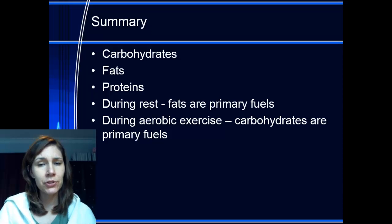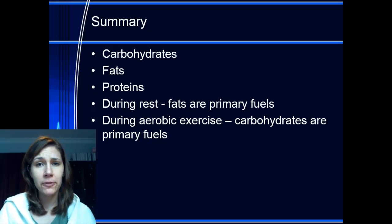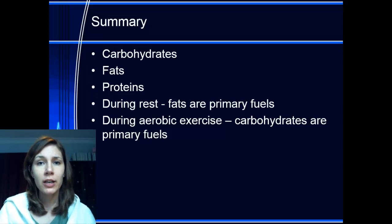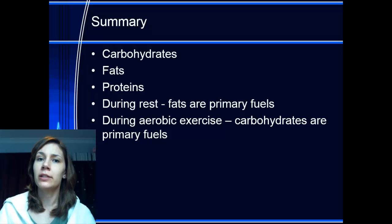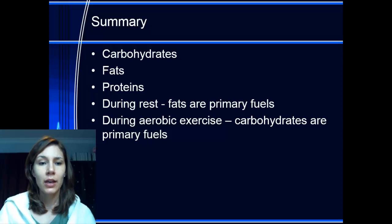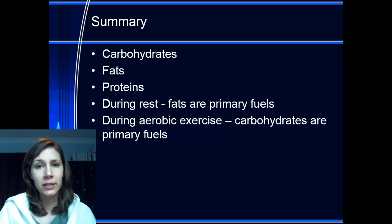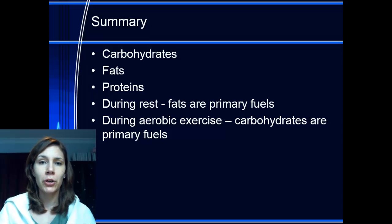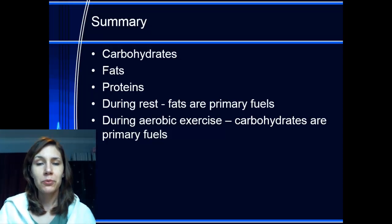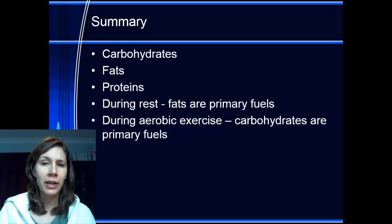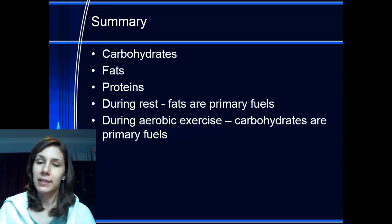In summary, carbs, fats, and proteins are the three main fuels — the only fuels from food — that help create ATP during muscular contractions. During rest, fats are your primary fuel, but during exercise that flips over and glucose becomes your primary fuel. Thanks for watching, and keep an eye out for the video on energy systems.